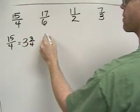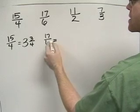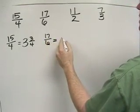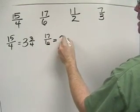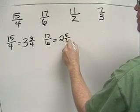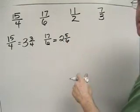17 sixths becomes, well, 6 goes into 17 two times with 5 left over, so that's 2 and 5 sixths.